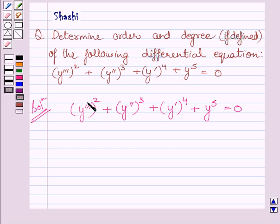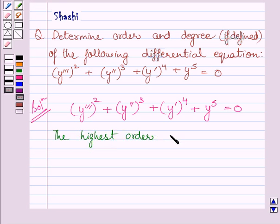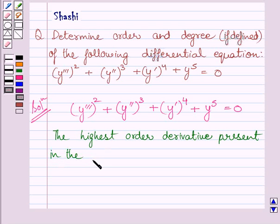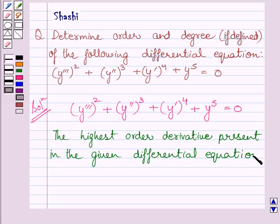Now, this is the highest order derivative occurring in this equation. So, the order of this differential equation is 3. The highest order derivative present in the given differential equation is y triple dash, so its order is 3.